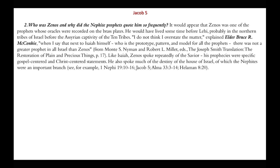Number two: who is Zenos, and why did the Nephite prophets quote him so frequently? It would appear that Zenos was one of the prophets whose oracles were recorded on the brass plates. He would have lived some time before Lehi, probably in the northern tribe of Israel, before the Assyrian captivity of the ten tribes. Elder Bruce R. McConkie said that next to Isaiah himself, there was not a greater prophet in all of Israel than Zenos. Like Isaiah, Zenos spoke repeatedly of the Savior, and his prophecies were specifically gospel-centered and Christ-centered. He also spoke much of the destiny of the house of Israel, of which the Nephites were an important branch.